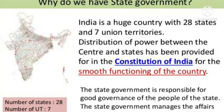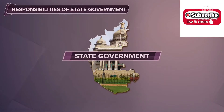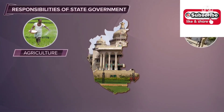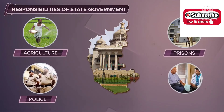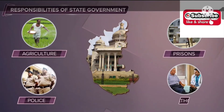Though their extent of power is limited, states have autonomy in their own matters. The state government takes care of local issues like agriculture, prisons, police stations, and healthcare. Some states are formed on the basis of language — for example, the language of Karnataka is Kannada.